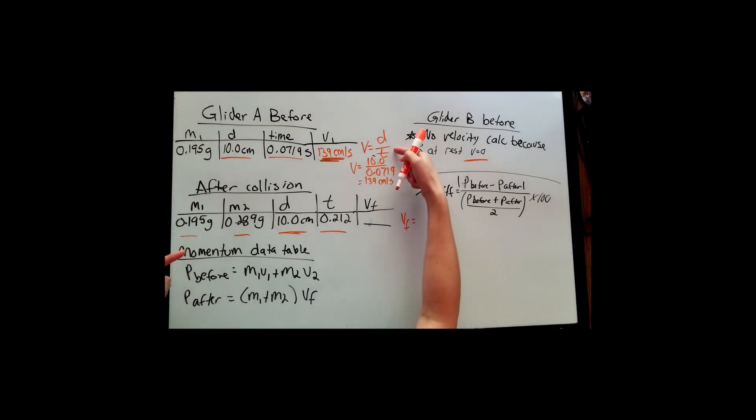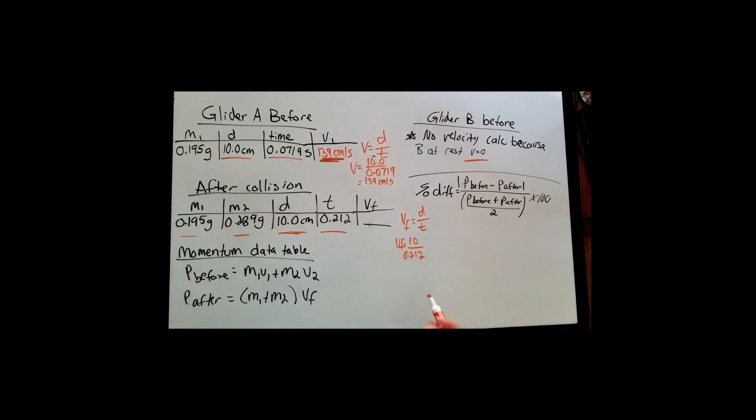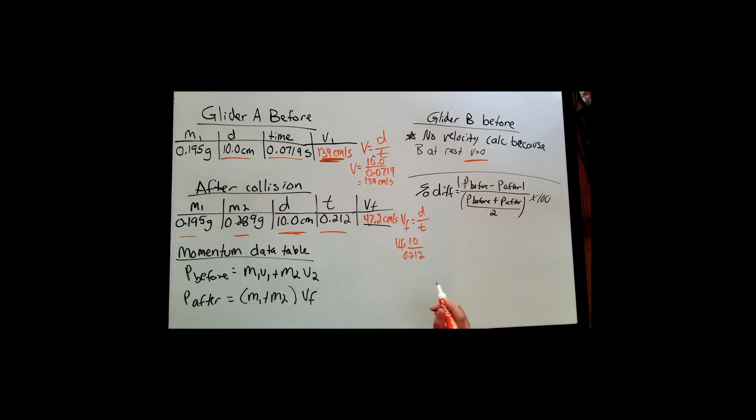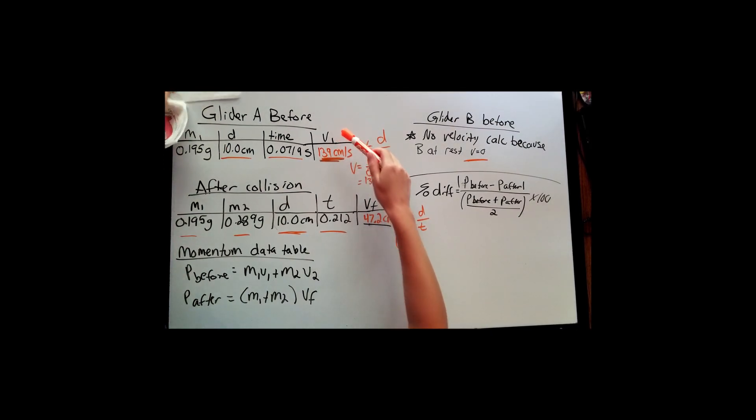We're still solving it the same way we solved for velocity up here. It's D over T. So that distance of 10 centimeters divided by the time it took. And in this case, it took a little longer. So 10 divided by 0.212. So now the final velocity I get to 3 sig figs, it's looking like it's 47.2 centimeters per second. And this makes sense because glider 1, once it hit glider B, it's going to slow down upon impact. It went from 139 down to 47.2 centimeters a second. So it's important to get these calculations correct because we're going to be using this V sub 1 of glider A, its initial velocity, and then this final velocity in the momentum data table next.